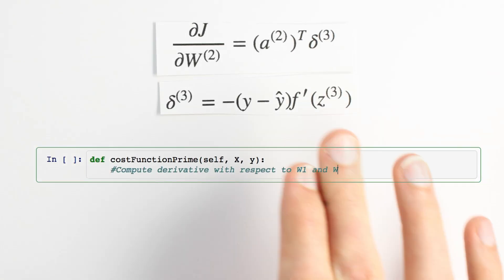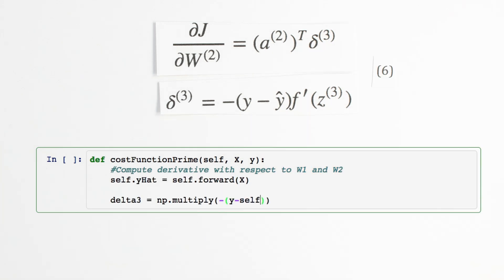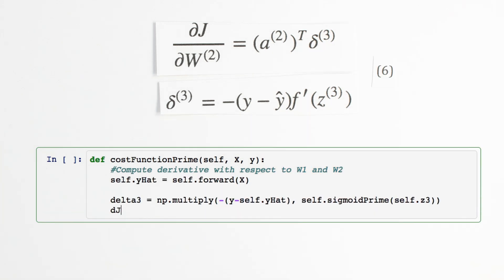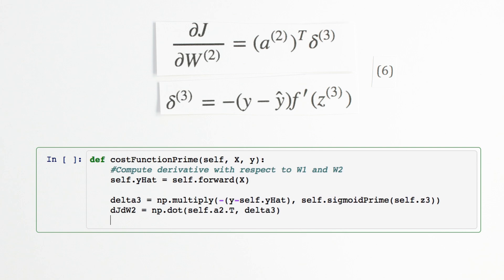We'll code up our gradients in Python in a new method, cost function prime. NumPy's multiply method performs element-wise multiplication, and the dot method performs matrix multiplication.